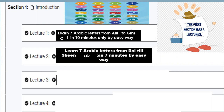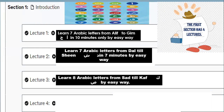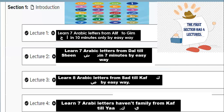In the second lecture you will learn seven Arabic letters from Dal to Sheen in seven minutes. In the third lecture you will learn eight Arabic letters from Sa to Kaf. In the fourth lecture you will learn seven Arabic letters. Let's go to the second section, which has six lectures.